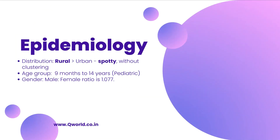Regarding epidemiology, the geographical distribution is mainly focused on rural areas. In urban areas it is seen, but the distribution is spotty — a few cases here and there without any clustering. The age group mainly affected is the pediatric age group, that is 9 months to 14 years of age. The male to female ratio is 1.077, so there is a very slight predilection towards the male gender.